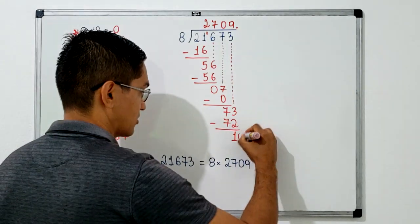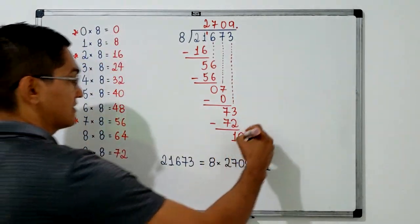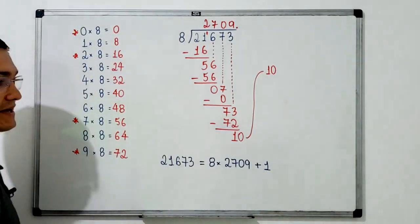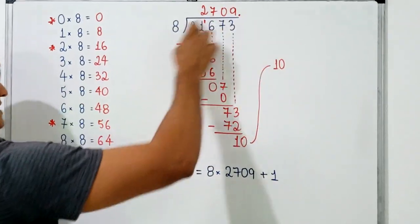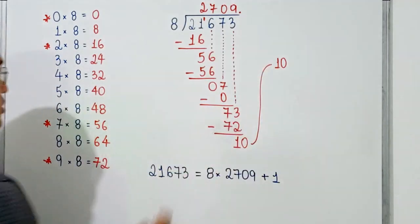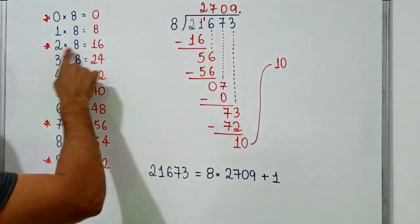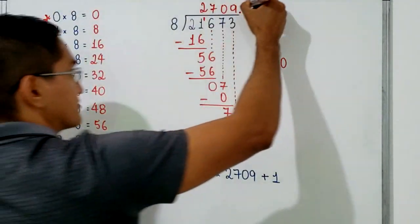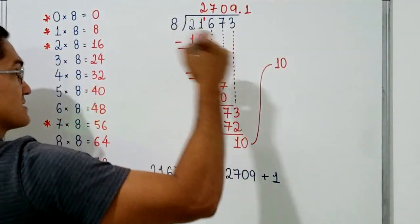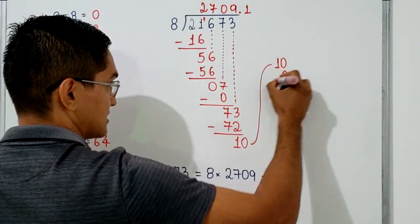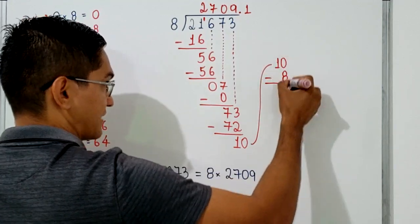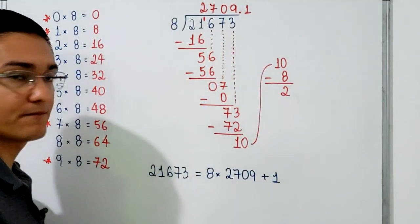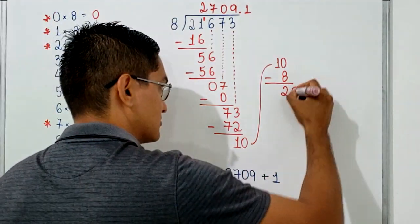You can put the decimal point here. Since there are no digits to bring down, you can bring down a zero, giving us 10. How many times does 8 go into 10 without going over? Two times is already too much, so the number is 1. I write 1 after the decimal point. 1 times 8 equals 8, so I subtract: 10 minus 8 equals 2.